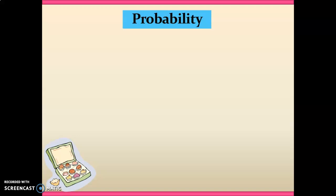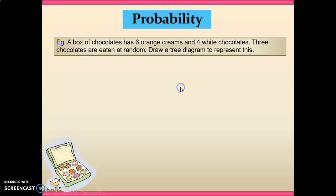So probably best illustrated by an example. A box of chocolates has six orange creams and four white chocolates, 10 in total. If three chocolates are eaten, draw a tree diagram to represent this.